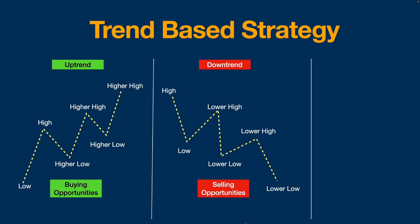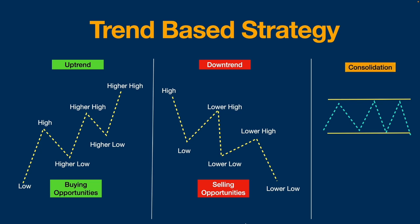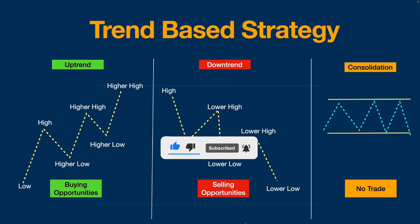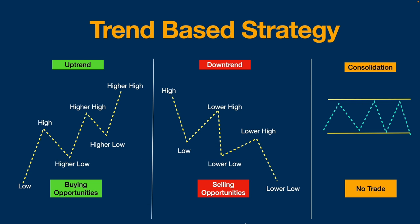There are situations where there will be indecision in the market, where the market trades within a range between support and resistance levels. There is indecision between buyers and sellers — we call this a consolidation range. If the market is in consolidation on a higher time frame, we will not take any trades. Always remember: during an uptrend we look for buying, during a downtrend we look for selling, and during consolidation we do not trade.